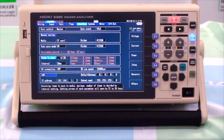The 3390 allows the user to customize the data logging using a recording interval which can be as fast as 50 milliseconds.